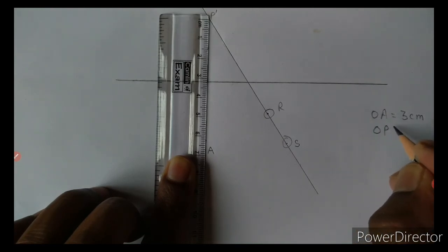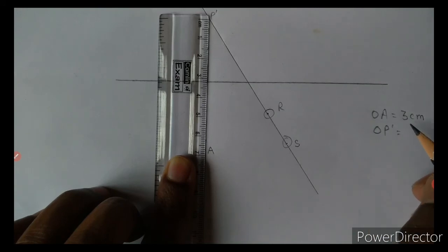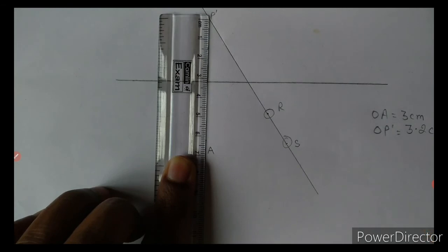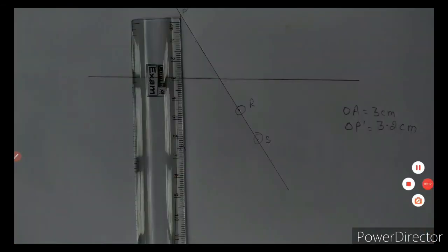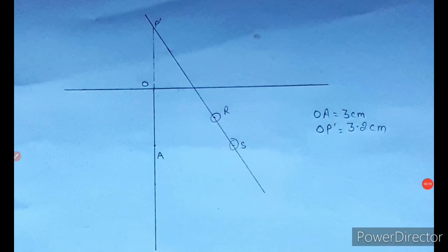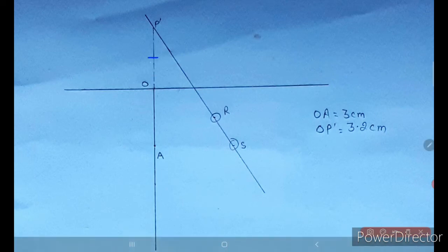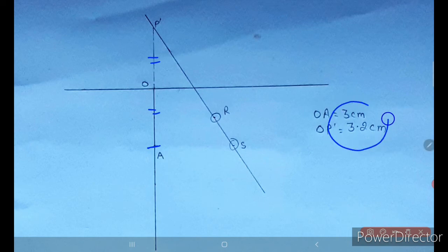I am getting OA equals 3 centimeters and OP dash equals 3.2 centimeters. Here is my final diagram after the experiment. We measured this distance and this distance, and these values need to be filled in the observation table afterwards. Please remember these values as we shall use them afterwards.